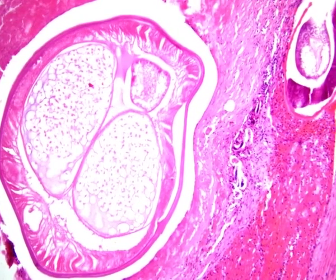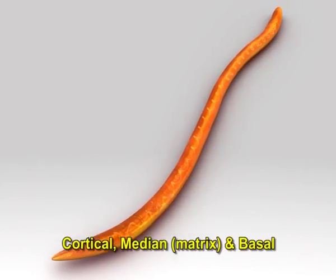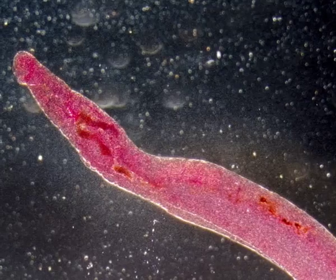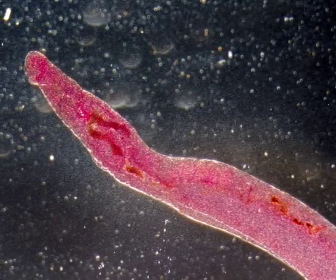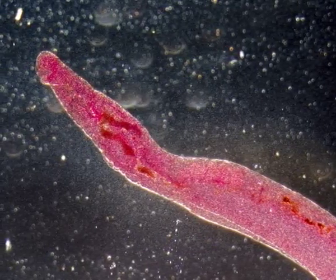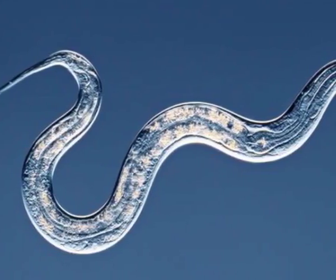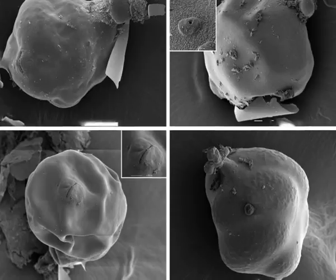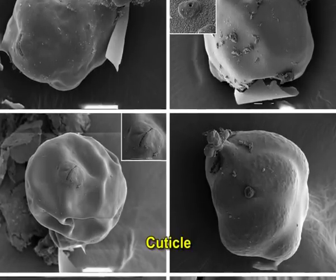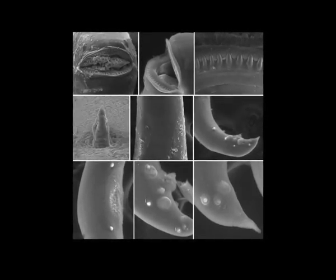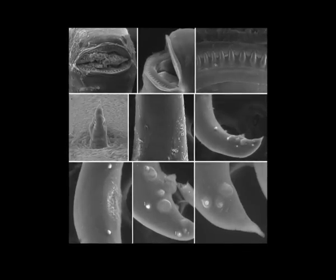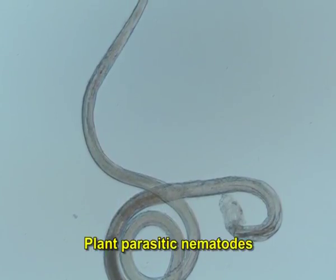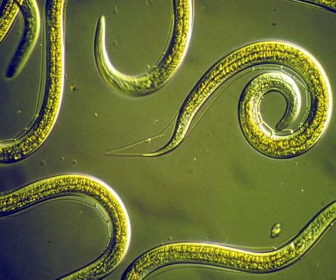The cuticle basically comprises three layers: the cortical, the median (or matrix), and the basal layers. Many nematodes have markings on the surface of their cuticle, which are varied and complex and have often been used by taxonomists to assist in the identification of various species. The cuticular annulations are categorised into punctations — minute round dots arranged in a pattern that act as strengthening structures. Transverse markings are called striations — transverse lines on the surface of the cuticle used by taxonomists to distinguish between various plant parasitic nematodes. They give nematodes a false appearance of being segmented, and these annulations are seen from head to tail.